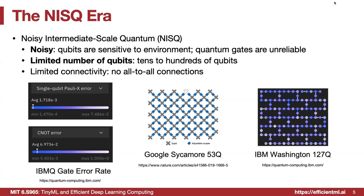Right now we are in the noisy intermediate-scale quantum (NISQ) era. 'Noisy' means the qubits are very sensitive to the environment and quantum gates are very unreliable. Typically the single-qubit Pauli-X error rate is around 1.7 × 10⁻³, meaning roughly one error per 1000 gates. In contrast, classical CMOS technology has error rates less than 10⁻¹⁵ to 10⁻²⁰.